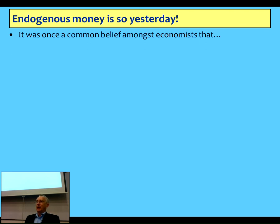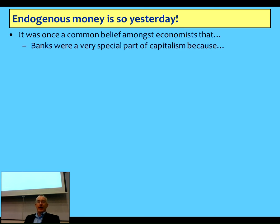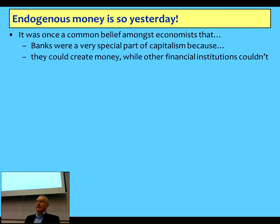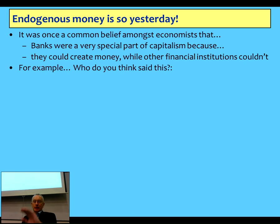Endogenous money — you can use the old cliche, it's so yesterday, because when you take a look in the literature you can't find it in the mainstream. The mainstream has rejected it. But it was a mainstream belief. The belief was that banks were a very special part of capitalism because they can create money, which other institutions can't do. And that was a commonplace attitude up to and ending just slightly before the General Theory.